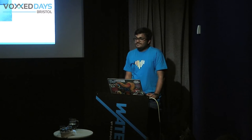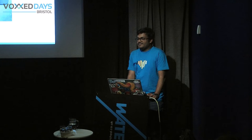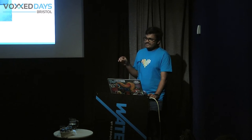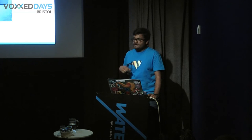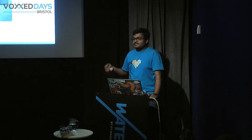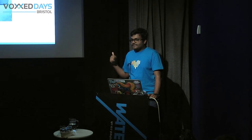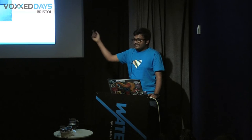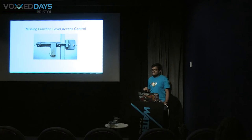Here's a real-time example from my college portal. When results were announced, my college website had this vulnerability and we took advantage of it. The URL pattern was something like 'XYZ University/progress-report/my-hall-ticket-number'. If we changed the hall ticket number from, say, 97 to 99, that URL would also be accessible to us — making it a victim of this vulnerability.